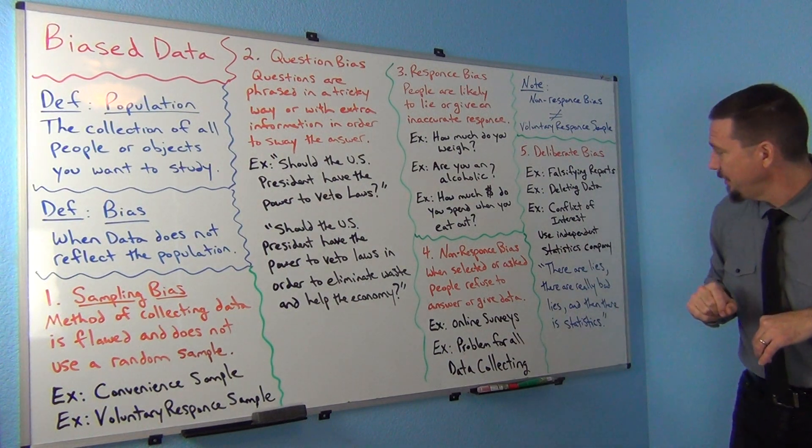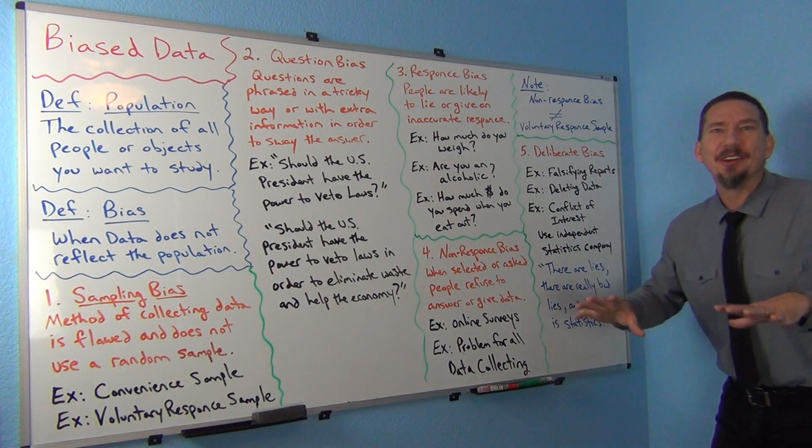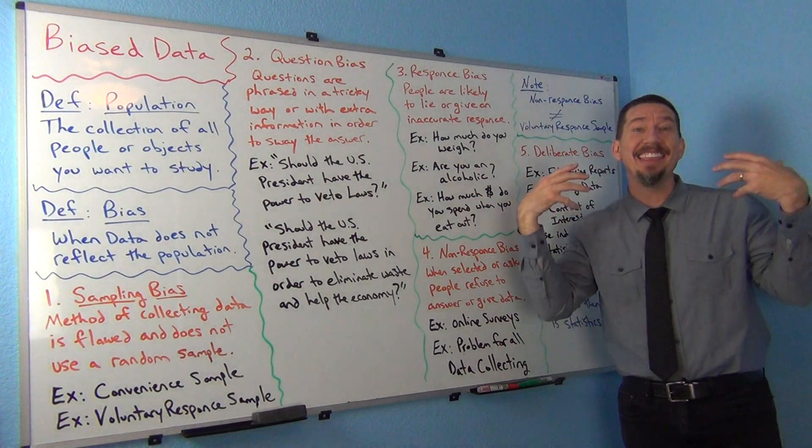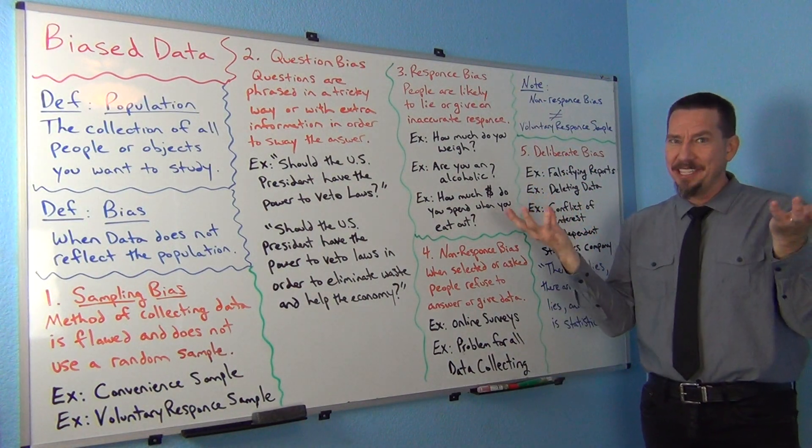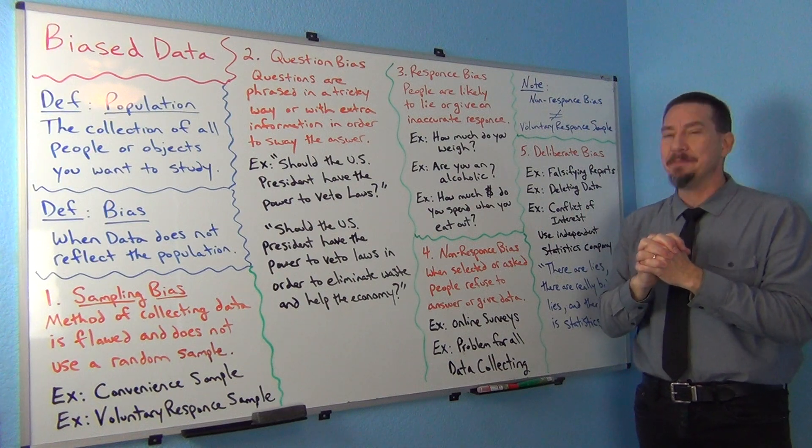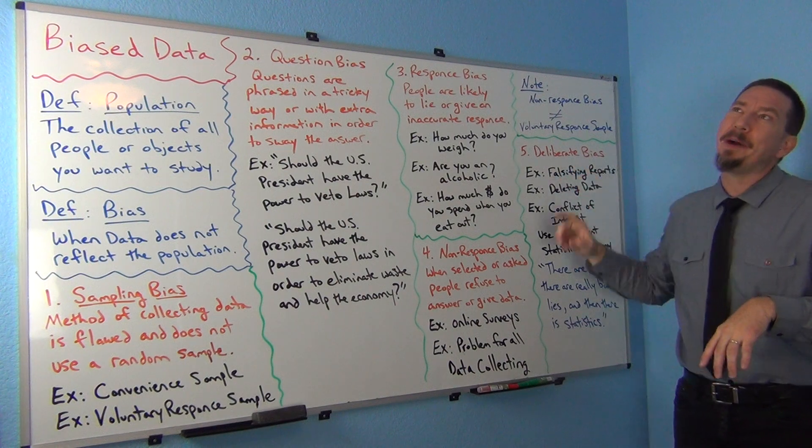All right, let's look at our last one. So that saved the best for last. What did we say? There are lies, there are really, really bad lies, and then there's statistics. Okay. So sometimes ethics comes into this. So let's look at deliberate bias. So deliberate bias. Now we're talking about sort of really shady, deliberate stuff going on.